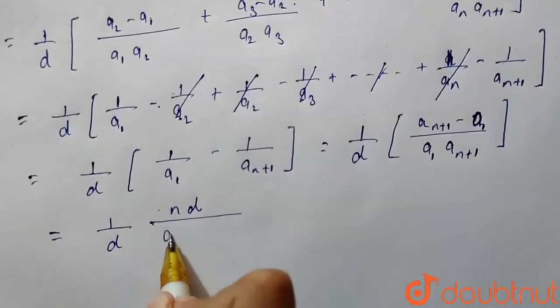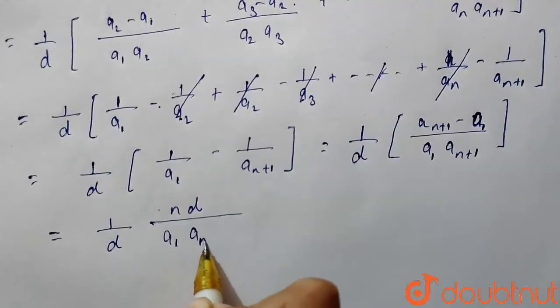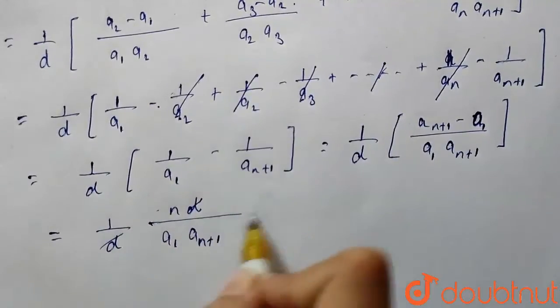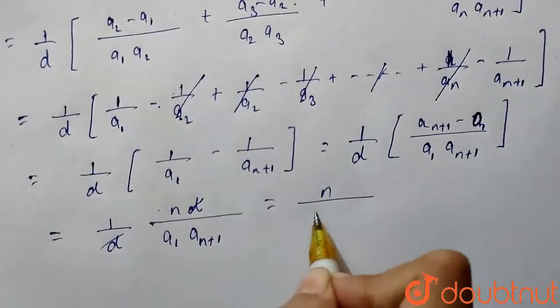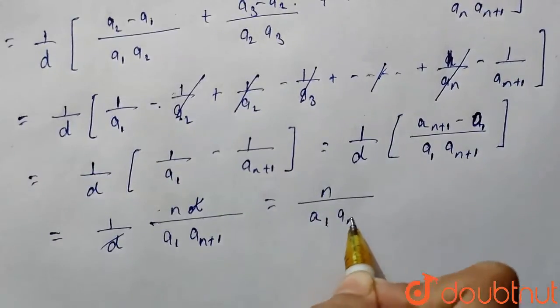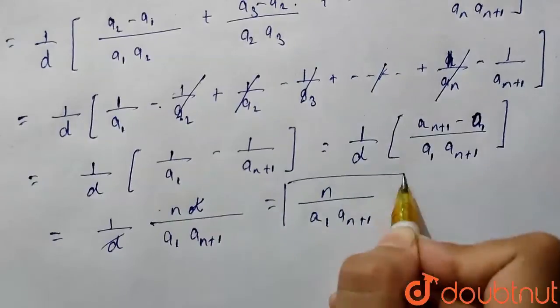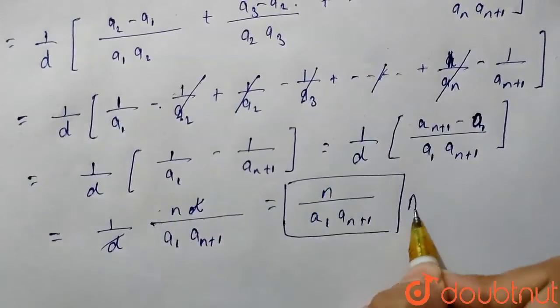So it will give n times d and here it will get an plus 1. So d will cancel and we will get finally answer n upon a1an plus 1 and this is our final answer.